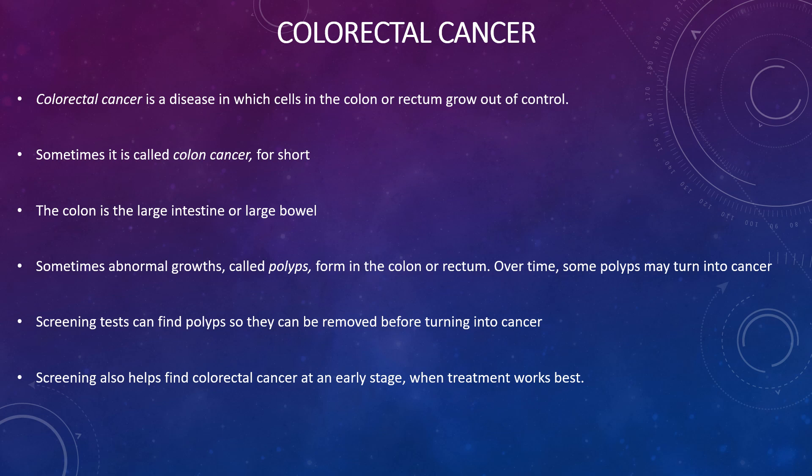Colorectal cancer is a disease in which cells in the colon or rectum grow out of control, sometimes known as colon cancer. The colon is the large intestine or large bowel. Sometimes abnormal growths called polyps form in the colon or rectum, and over time some polyps may turn into cancer. Screening tests can find polyps and remove them before they become cancerous, and also help find colorectal cancer at an early stage when treatment works best.